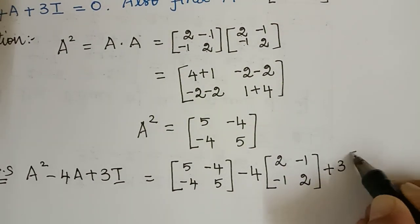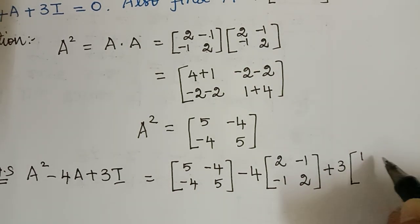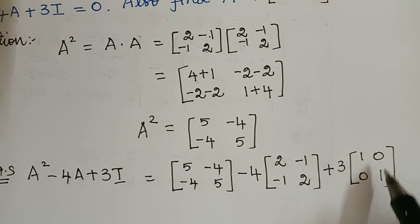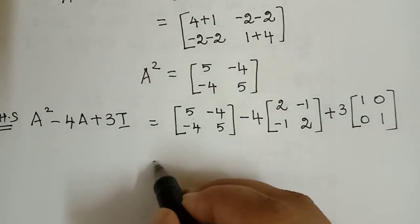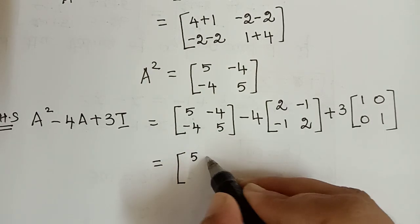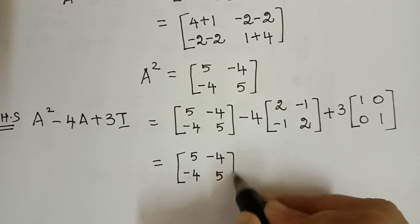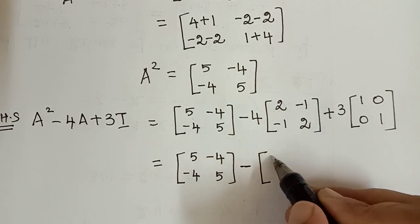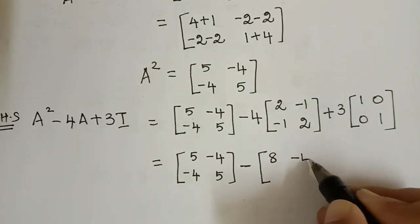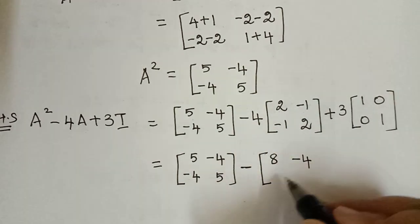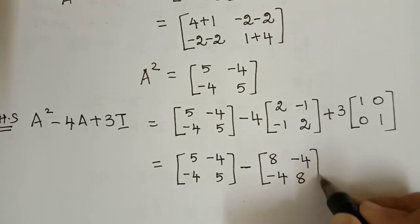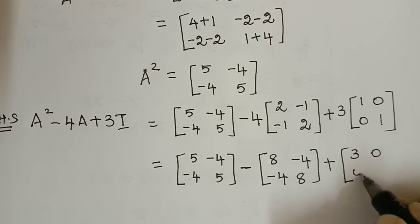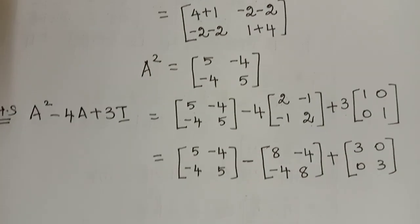The identity matrix I is [1, 0; 0, 1], so 3I becomes [3, 0; 0, 3]. Multiplying -4 by each element of A gives [-8, 4; 4, -8]. So we now have [5, -4; -4, 5] plus [-8, 4; 4, -8] plus [3, 0; 0, 3]. We simplify element by element.